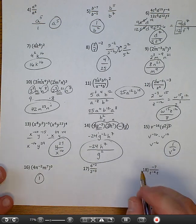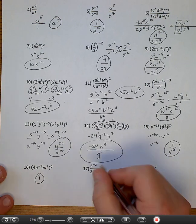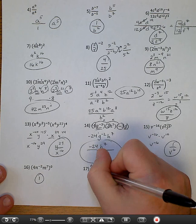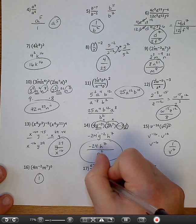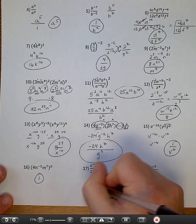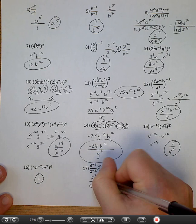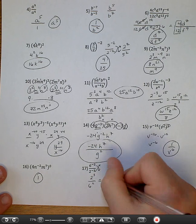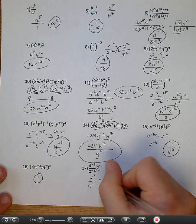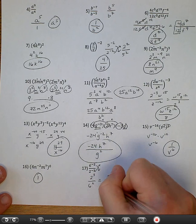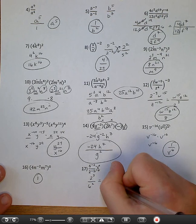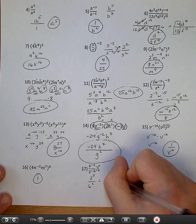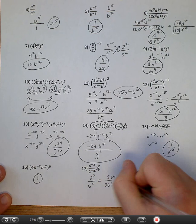Seventeen. Two negative exponents — we're going to move them. It goes to the bottom, it goes to the top. This will be two to the third on top, six squared on the bottom. Two to the third is eight, six squared is thirty-six. And then I'm going to reduce: divide both by four. So it's going to be two over nine.